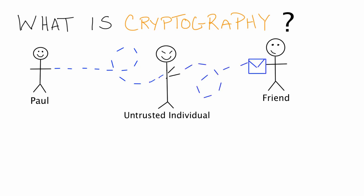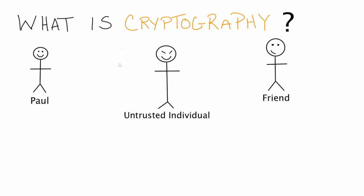So how can Paul and his friend be sure that nobody in between has uncovered the secret message? One thing Paul could do is he could use cryptography to encrypt the message. That way, if somebody in the middle got the message, they would be unable to understand its contents.